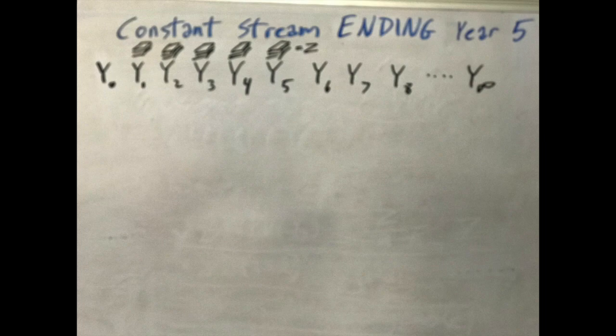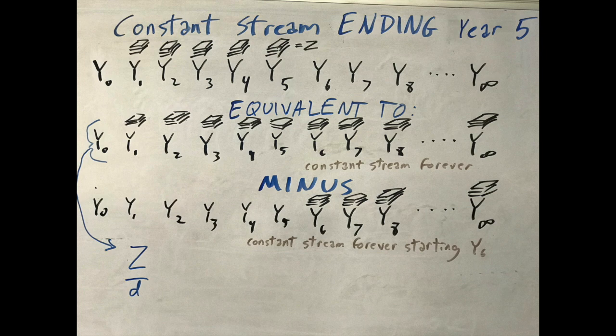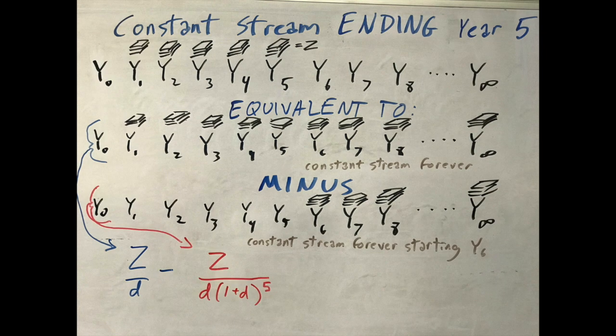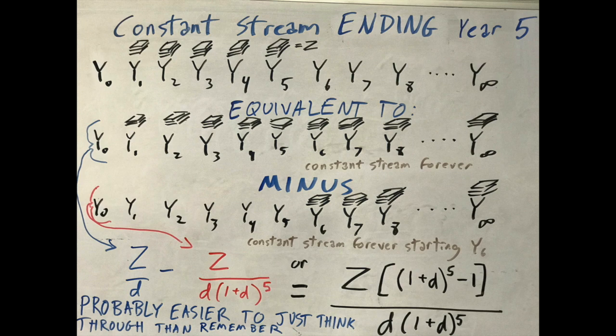This lets you see how to determine the value of something that starts next year and continues for a fixed amount of time — say, ending in 5 years. That's worth the same as the constant stream starting next year minus the amount of the constant stream starting the year after the benefits run out, which would be year 6. You figure the constant stream and then subtract the value of the constant stream discounted from 5 years in the future. Now that you know how to find the NPV of a pile of cash, a constant stream, a delayed constant stream, and a finite constant stream, you should be able to figure out the NPV of any basic mix of future costs and benefits.